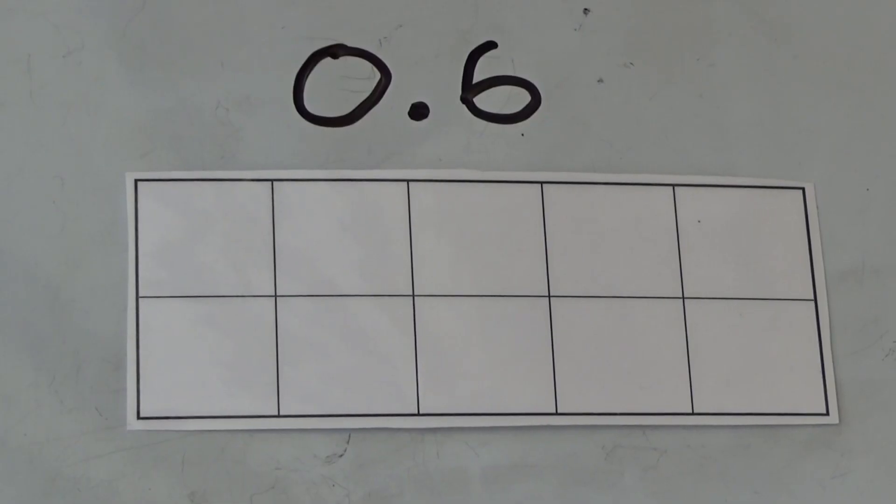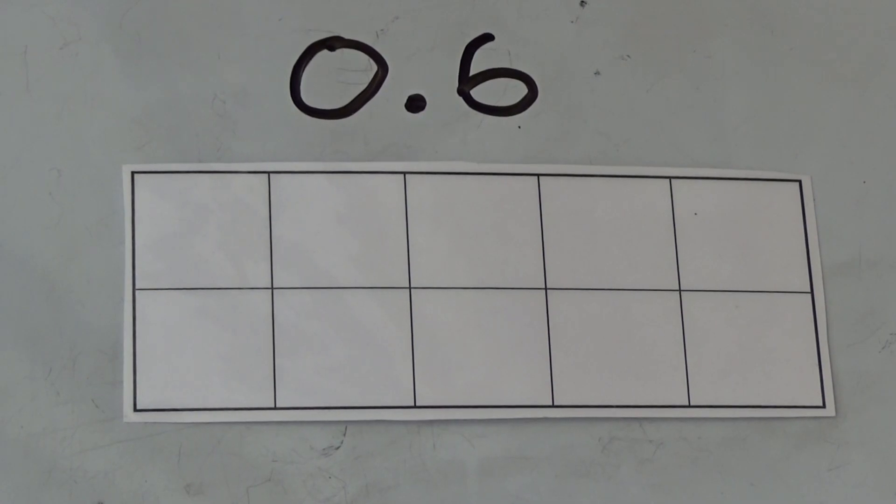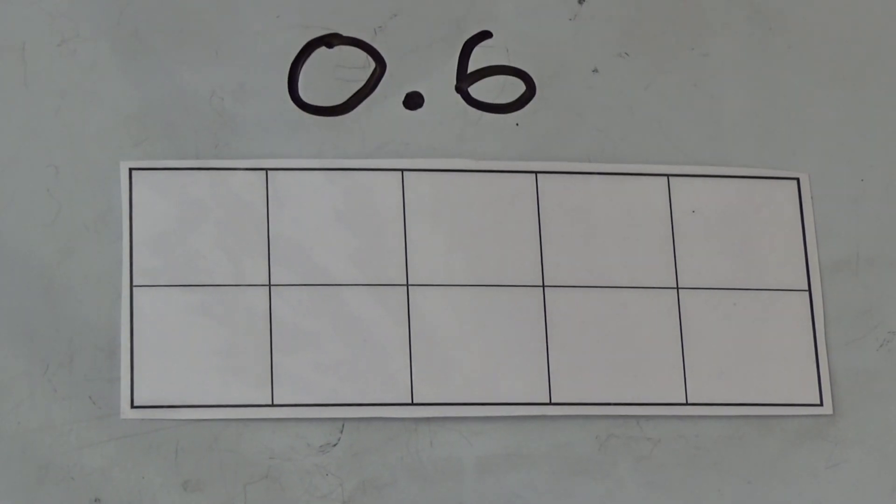We're going to start by looking at numbers less than a whole, then we're going to look at numbers over a whole. The first number we'll look at is 0.6. 0.6 means 6 tenths of our tens frame is filled, so I'm going to put 6 counters onto my tens frame.